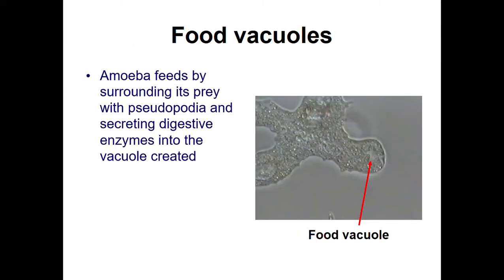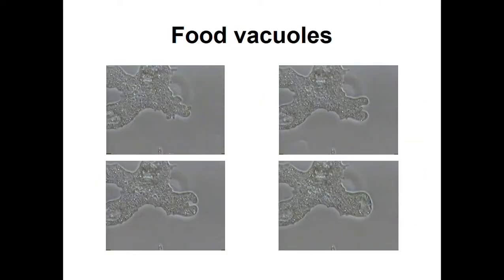Here is a food vacuole. Once the pseudopodia covers the prey, this is how a food vacuole will look. Looking at picture 1, here is a small food particle and the pseudopodium is getting developed, covering up the food particles — and here the food vacuole has been completely enclosed.